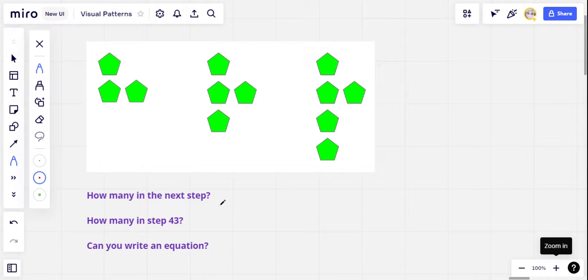Hi everybody! We are back with another visual pattern challenge. So here's our visual pattern. We have step number one, step number two, step number three, and your job is to figure out how many of these pentagons are going to be in step number four.